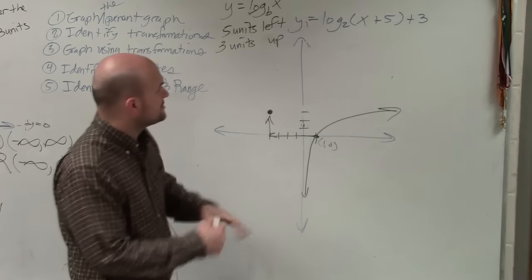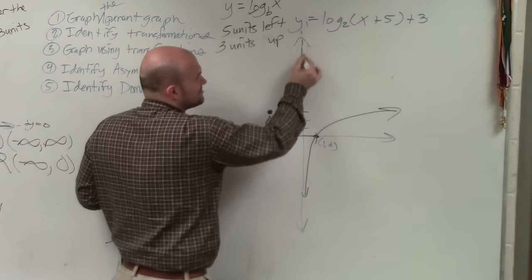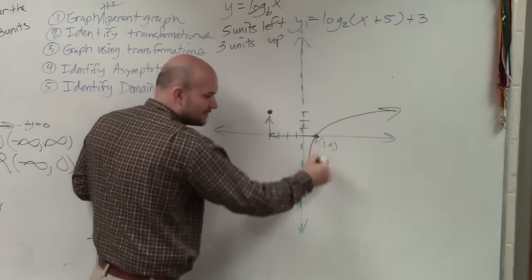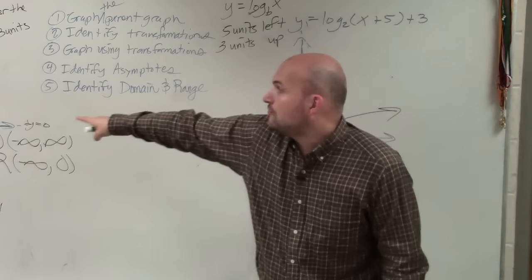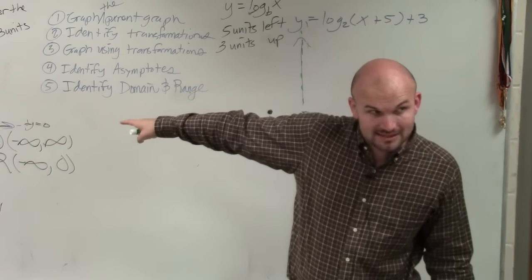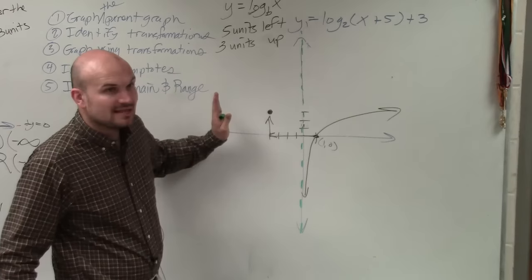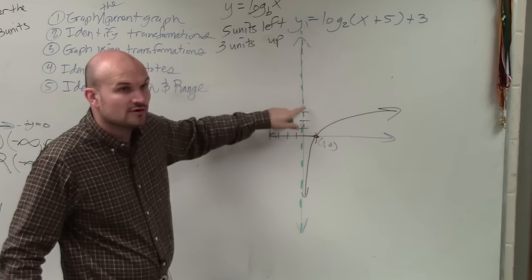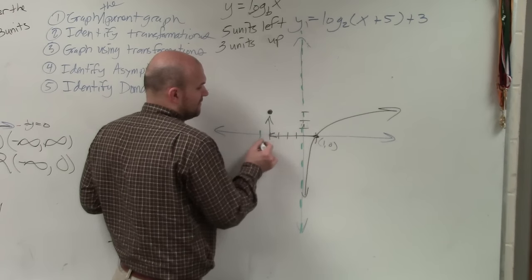However, it is very important to also recognize, identify the asymptotes. When we have an asymptote here, this asymptote is vertical. That's where the graph approaches. It approaches a vertical asymptote. Over there, it approached a horizontal asymptote. So if I move my graph 5 units to the left, I also need to move my asymptote 5 units to the left. 1, 2, 3, 4, 5.